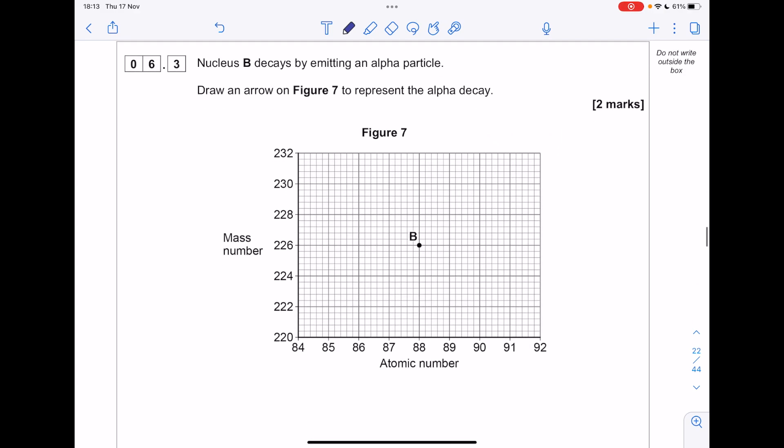Nucleus B decays by emitting an alpha particle. Draw an arrow on figure 7 to represent the alpha decay. So an alpha particle is lost means that two protons and two neutrons have been lost. So expect the mass number to decrease by 4 and the atomic number to decrease by 2.